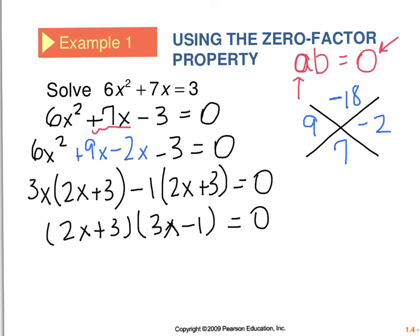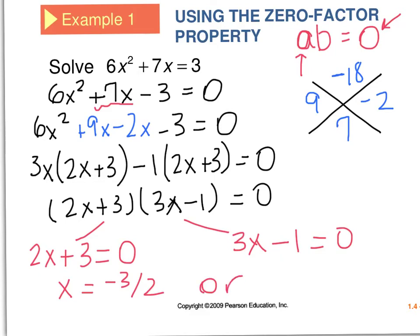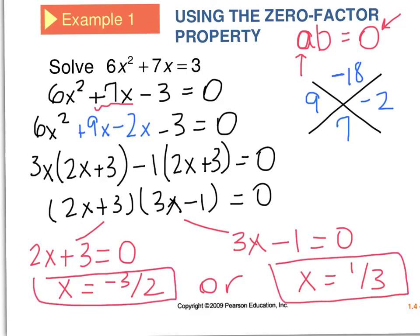And this is where our zero factor property will come into play. So the zero factor property says that either this term has to be zero, or this term has to be zero. So using that information, I can take these factors and set them each equal to zero to solve for x. And when I do that, I get x equals negative 3 over 2 and x equals 1 over 3 for my two solutions to the quadratic. And I do want to mention that a quadratic solution can be called a solution, an x-intercept, a root, or a zero.